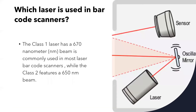Which laser is used in barcode scanners? The class 1 laser has a 670 nanometer beam and is commonly used in most laser barcode scanners, while the class 2 features a 650 nanometer beam.